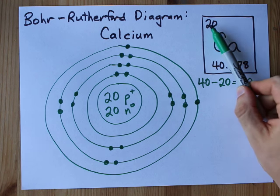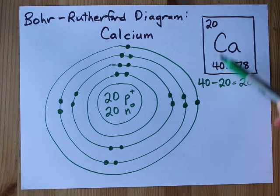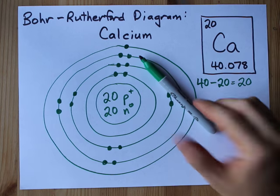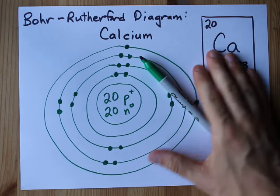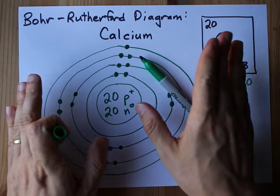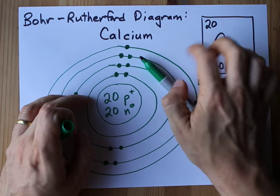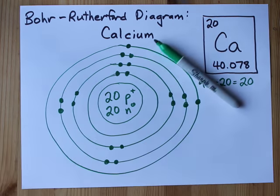Our nucleus had 20 protons, and 40 minus 20 gave us 20 neutrons as well. Calcium is as big as they come until the rules change completely, so confirm with your teacher whether or not you're going to stop at calcium. And best of luck.